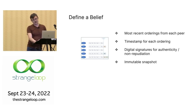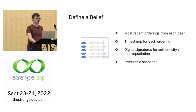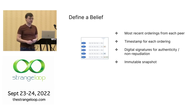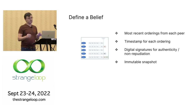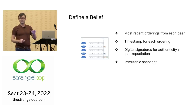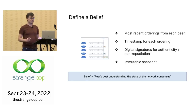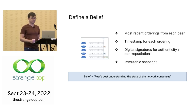Of course, this is an imaginary world — we don't actually have a view of the entire network. But what we can do is define something called a belief. The belief is a data structure containing the most recent orderings from each peer, with a timestamp on each. Each peer signs their ordering as part of this data structure so we can authenticate and verify it. It's effectively a mutable snapshot — the peer's best understanding of the state of the network consensus according to the information it has received so far.